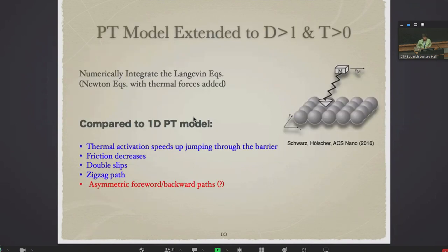There is a number of extensions to this PT model. For example, one can extend it to two-dimensional, as is schematically shown here. The one-dimensional PT model can be extended to two dimensions. Also temperature does not have to be zero—one can do the same with finite temperature. And these extensions are very successful to explain so many different observations and experiments, including double slips and zigzag paths. But however, the asymmetric forward and backward passes cannot be still explained with this still simple PT model, because there is in principle no asymmetry in this model.